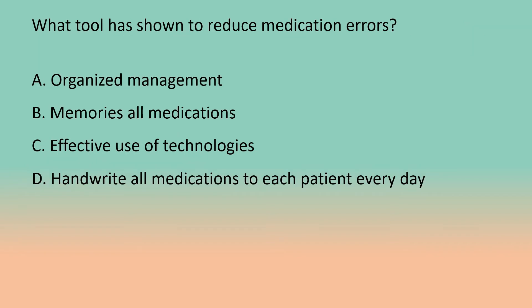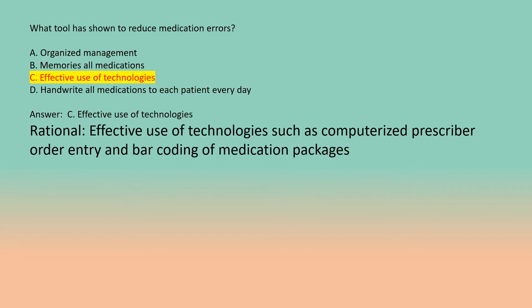What tool has been shown to reduce medication errors? A. Organized management. B. Memorizing all medications. C. Effective use of technologies. D. Handwrite all medications to each patient every day. Answer: C. Effective use of technologies. Rationale: Effective use of technologies such as computerized prescriber order entry and barcoding of medication packages.